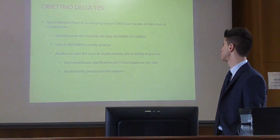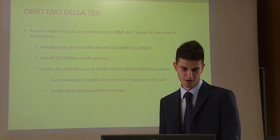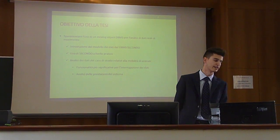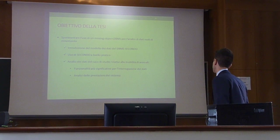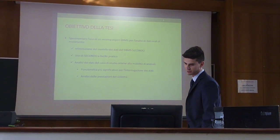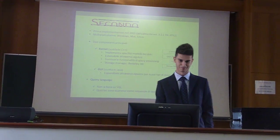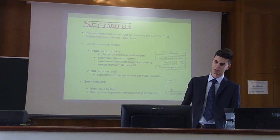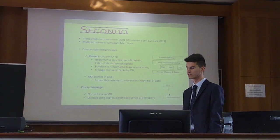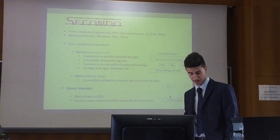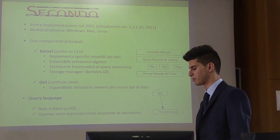C'è stata quindi un'introduzione nel modello dei dati del CMS. L'uso di quest'ultimo a livello pratico e poi un'analisi dei testi ai casi di studio relativi alla mobilità degli animali, con funzionalità più significative per l'interrogazione dei dati e un'analisi di prestazione del sistema. La prima utilizzazione risale al 2001 e noi parliamo alla versione 3.2.1.